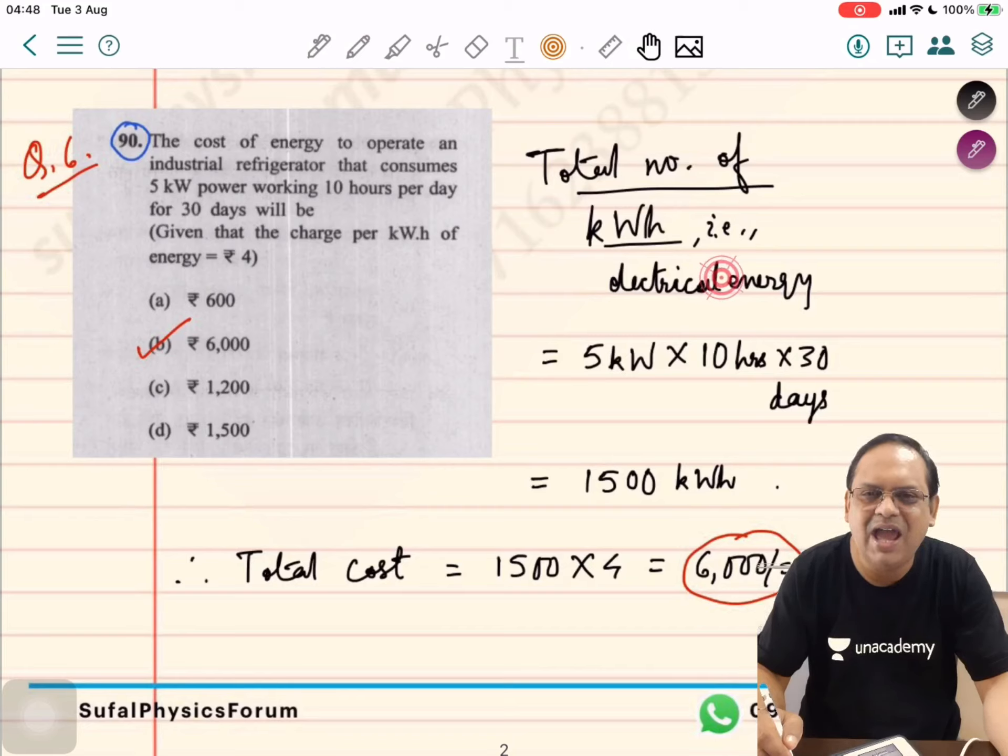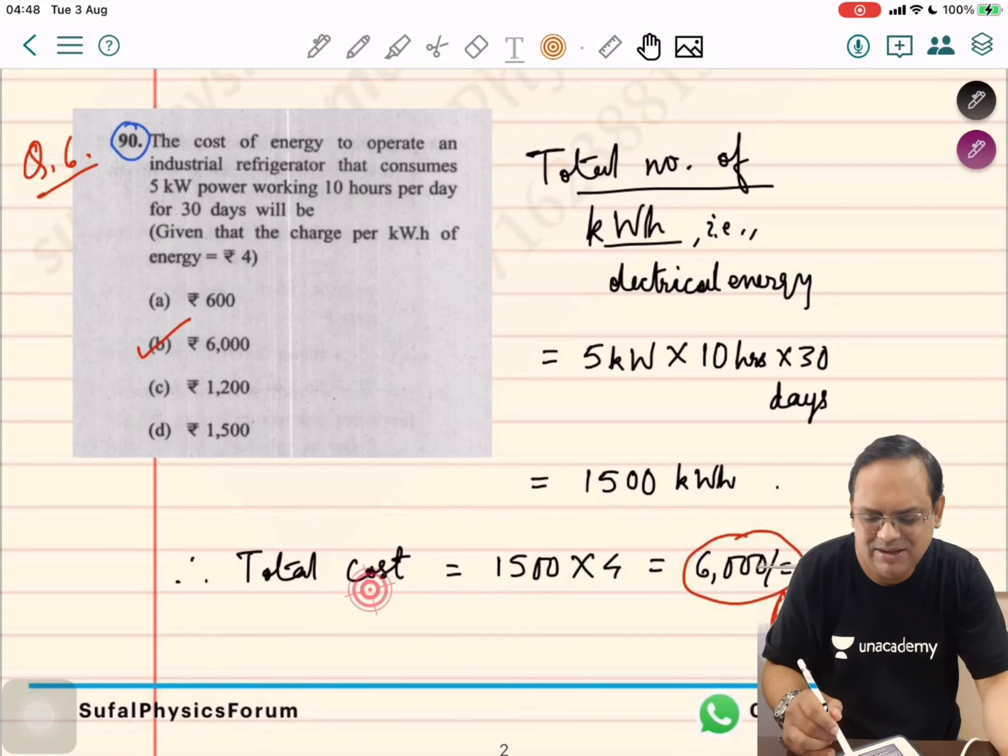Power in kilowatt and time in hours, not seconds. You have to multiply 5 kilowatt times 10 hours times 30 days. Hence, we obtain 1500 kilowatt hours. Total cost will be 1500 multiplied by 4, which is Rs. 6000. The bill is 6000.